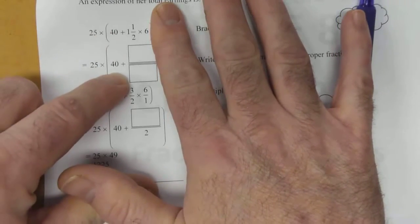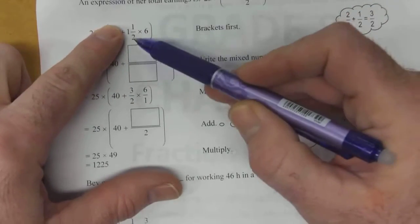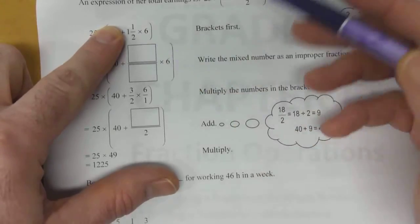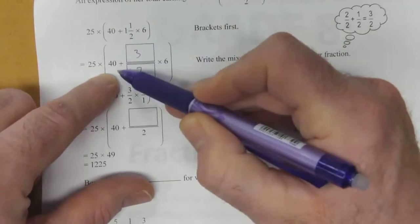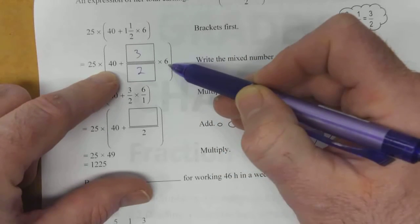So the 40 plus doesn't change. We need to do this multiplying first. So 2 times 1 is 2, plus 1 is 3. So one and a half becomes three halves. So now inside the brackets, we have 40 plus three halves times 6. Now we can do that multiplication.